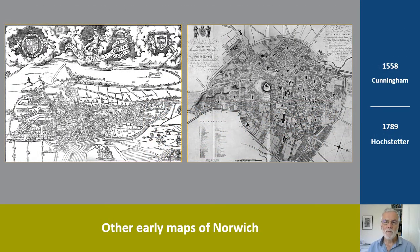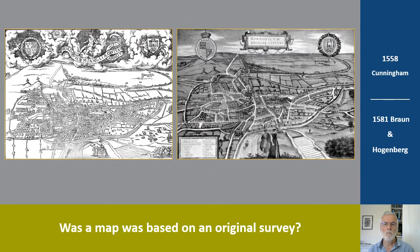Other early maps of Norwich range from Cunningham's map of 1558 through to Hochstetter's of 1789. But never assume with a map that it was based on an original survey and thus accurately reflected the situation on the ground at the time of publication. These two maps, published more than 20 years apart, look remarkably similar in appearance — and that raises the question, how original was the later one?